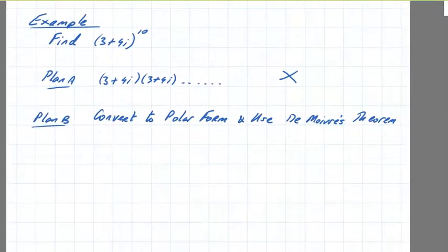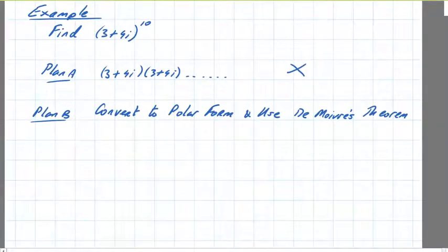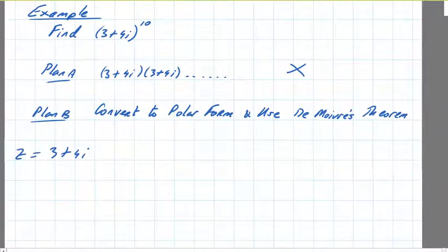The first thing to do is take 3 plus 4i in polar form. We'll just call it z. Convert to polar form. We've done this before, so just a quick revision. The modulus r is the root of 3 squared plus 4 squared, which gives us 5.